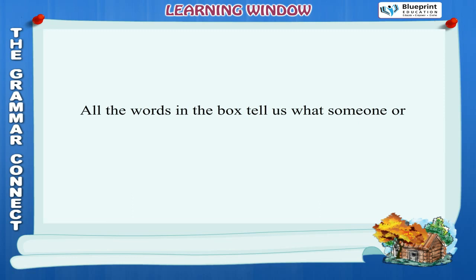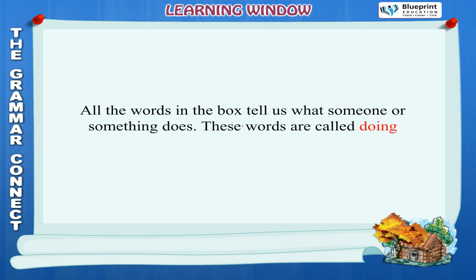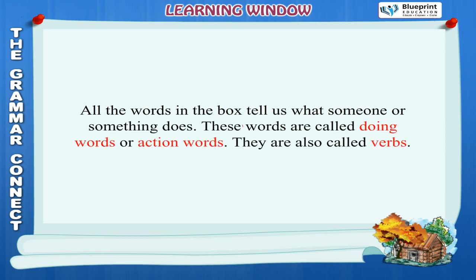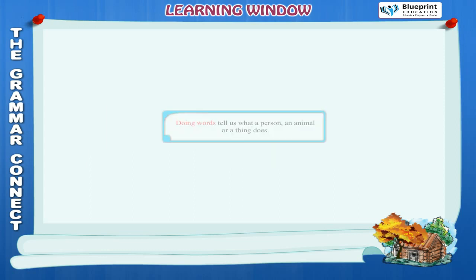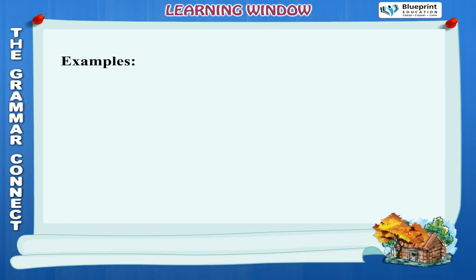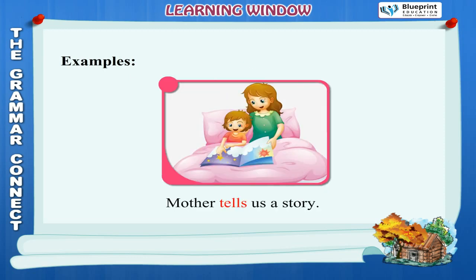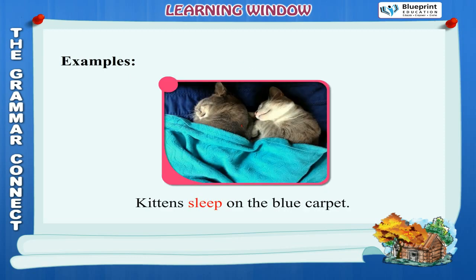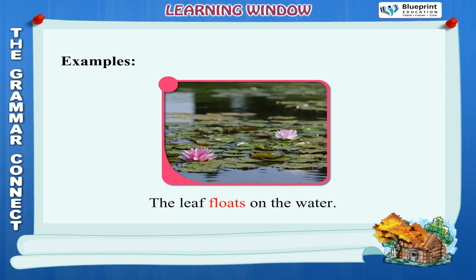All the words in the box tell us what someone or something does. These words are called doing words or action words. They are also called verbs. Doing words tell us what a person, an animal or a thing does. Examples: Mother tells us a story. Kittens sleep on the blue carpet. The leaf floats on the water.